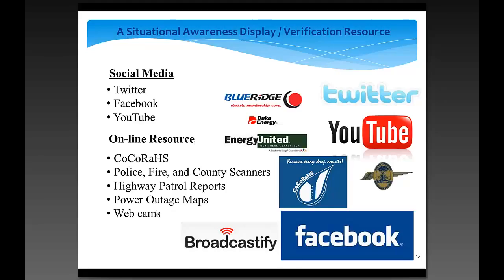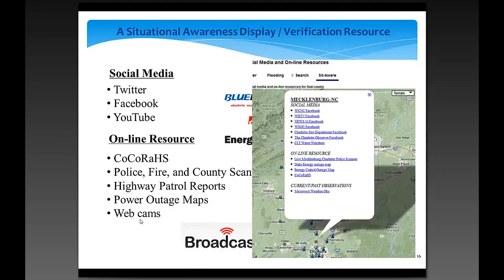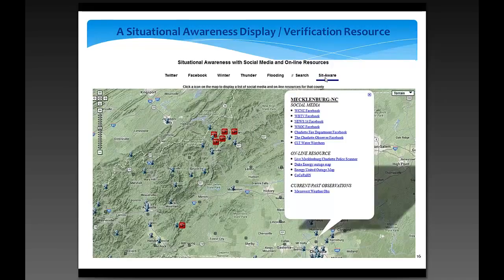The dashboard also provides a platform to display webcams. Under the situational awareness section, you can see the forecast area with webcam icons listed. Each county square contains a list of potential online sources for verification information applying to just that one county — utility companies, CoCoRaHS pages, and scanners serving that county. We have 46 counties and about 500 links total.